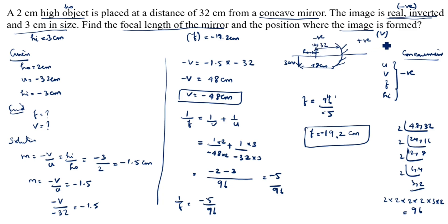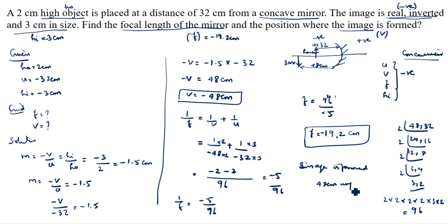The focal length of the concave mirror is minus 19.2 centimeter, and the position where the image is formed is 48 centimeter in front of the concave mirror. Thank you.